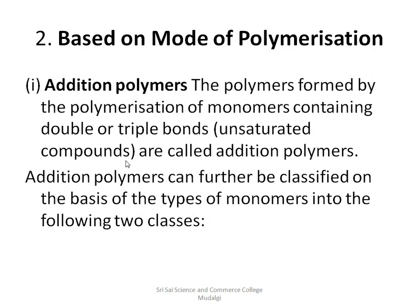The second mode of classification is based on mode of polymerization — that means how the monomers are joined together. Based on mode of polymerization, the first type is called addition polymers. Addition polymers are formed by polymerization of monomers containing double or triple bonds, which are referred to as unsaturated compounds. This type of polymerization is called addition polymerization.